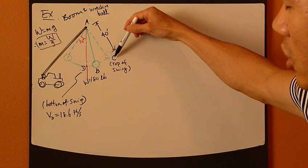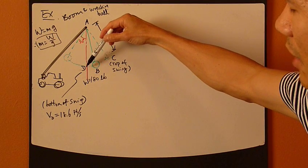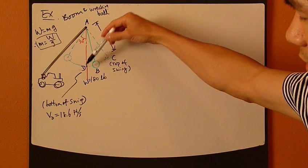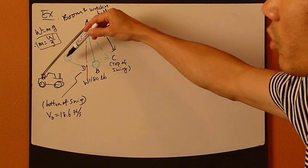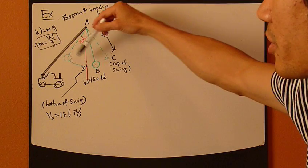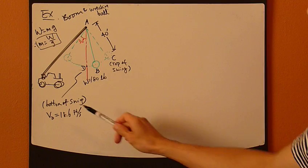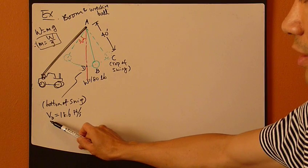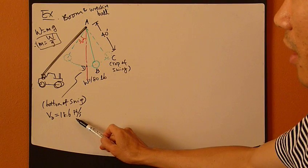And the ball weighs 180 pounds. At the top of the swing, it's position C. Bottom of the swing is position D, and position B is just anywhere between the two top positions. At the bottom of the swing, the velocity is given. Vd is given as 18.6 feet per second.